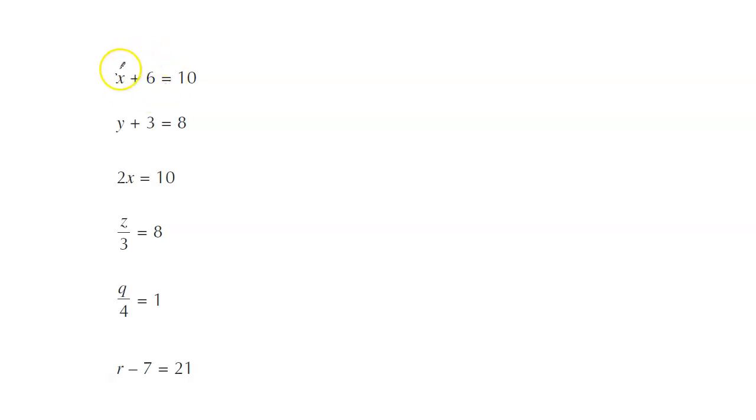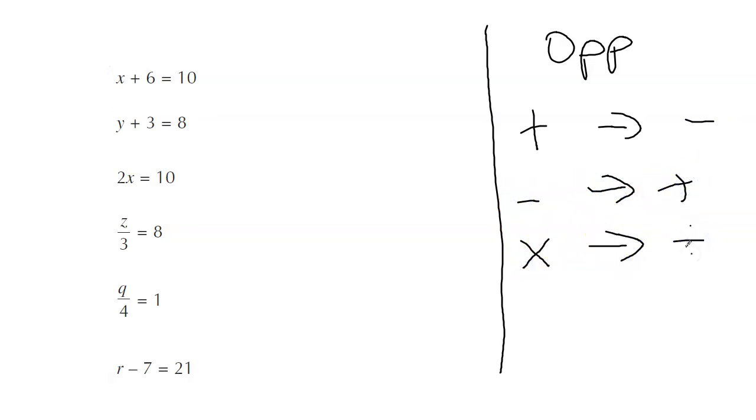The whole point of this is when we're trying to get rid of a number, we've got to do the mathematical opposite. If we've got a plus a number, the opposite is to take that number away. If we're doing a take away, the opposite will be to plus. A times is going to turn into a divide, and if we've got a divide, the opposite is going to times.